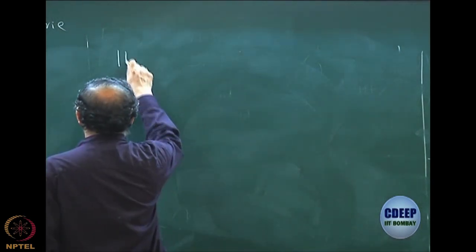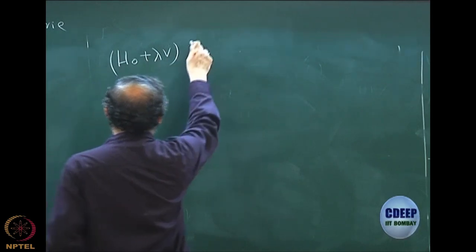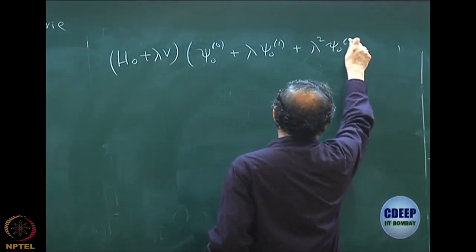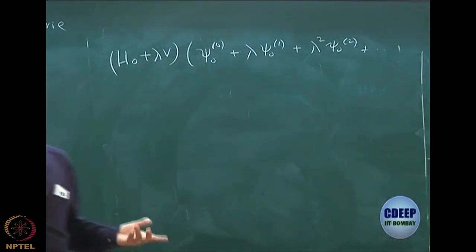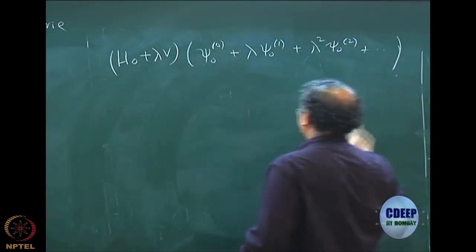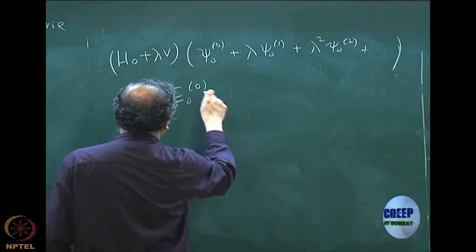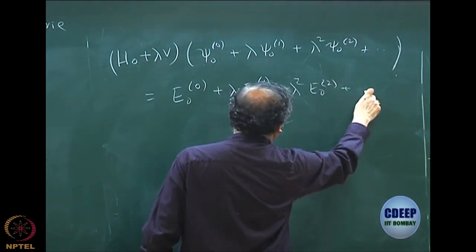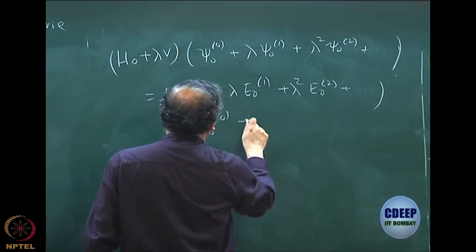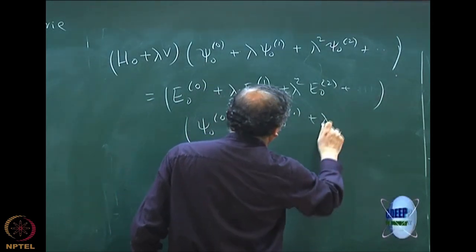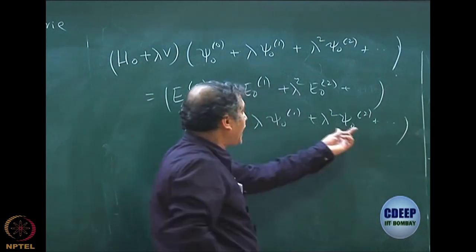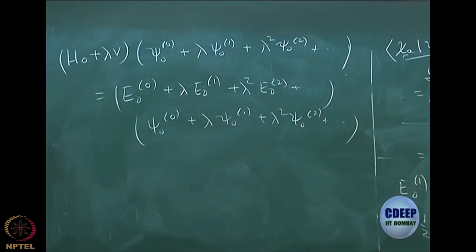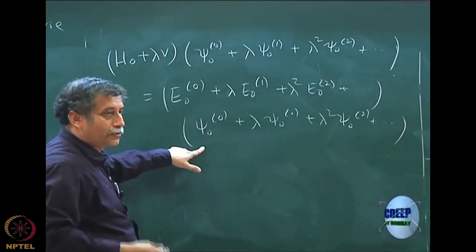Remember how I set this up. We took H0 plus λV, then wrote psi as psi^(0,0) plus λ psi^(0,1) plus λ² psi^(0,2) and so on. Similarly energy E(λ) equals E^(0,0) plus λ E^(0,1) plus λ² E^(0,2) and so on. Note that whether you write a factor of 1/2 or not does not matter — the actual values just get scaled. The 0th order equation is H0 psi^(0,0) = E^(0,0) psi^(0,0), which we already have.